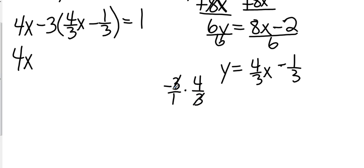The 3's will cancel, and so that's negative 1 times 4. That's just going to be negative 4x.